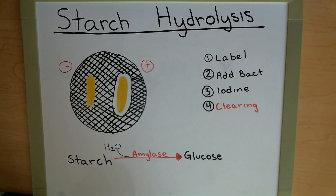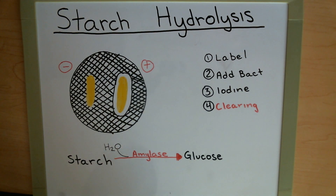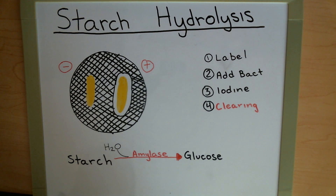Unlike other tests, these next tests are basically saying that we know we're going to have growth, but what is it about this growth that we care about? Just having growth doesn't mean a positive or negative result — it's the clearing around the bacteria that dictates that. In this test, it is the clearing in the presence of iodine that tells us whether we have a positive or negative result, indicating that the starch has been broken down into glucose and used by the bacteria.